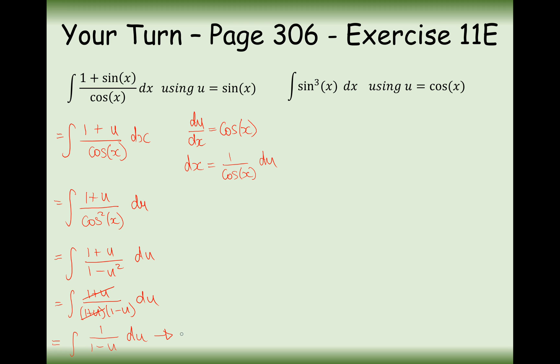In this case here, the answer is going to be minus ln 1 minus u plus c. Let's put an equal sign there. And we need to now substitute our letter in. So it's going to be minus ln 1 minus sine x plus c.